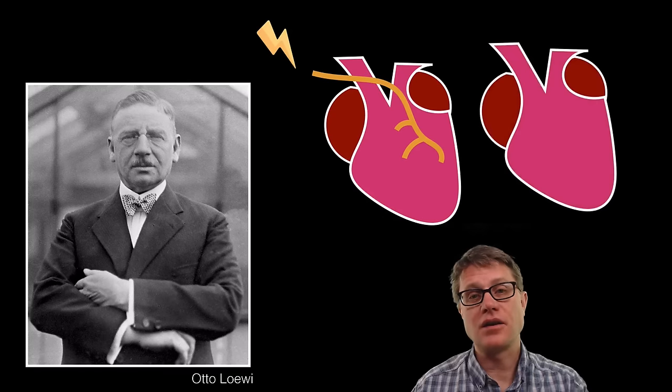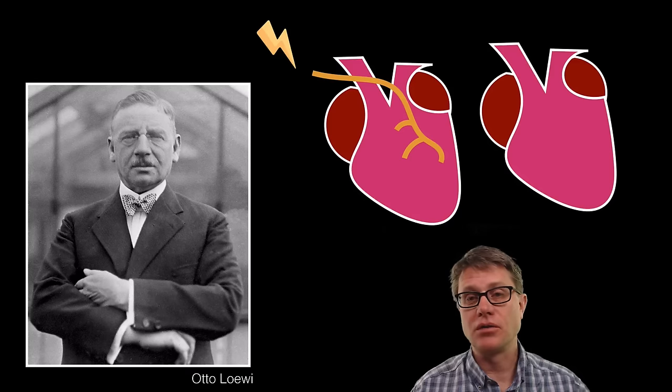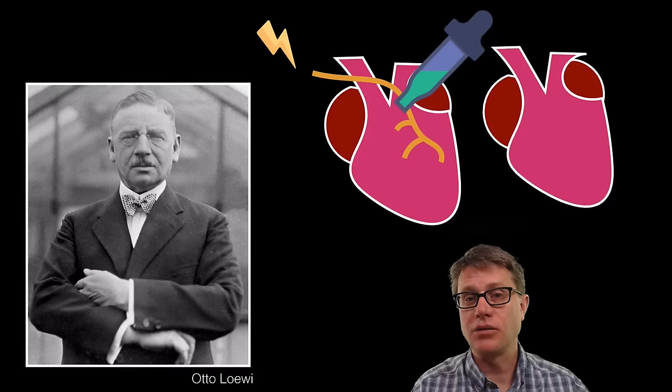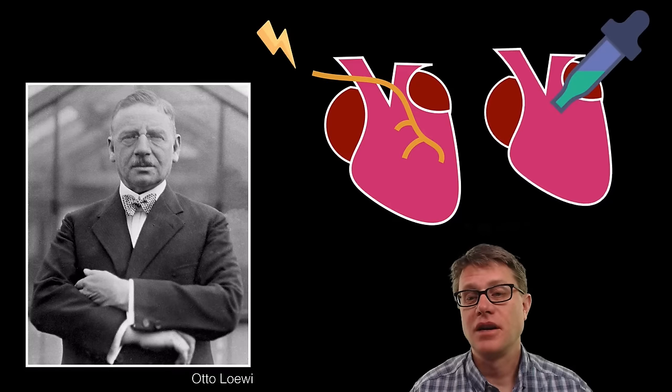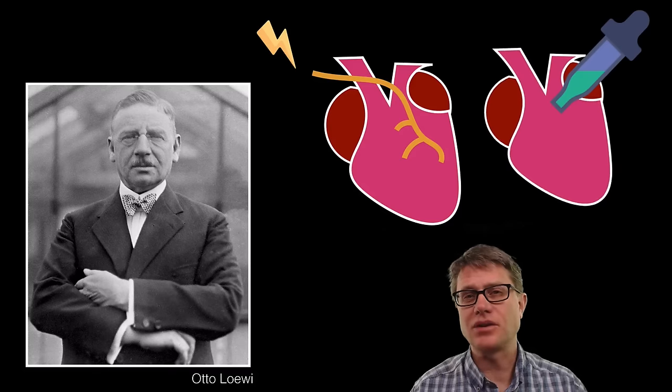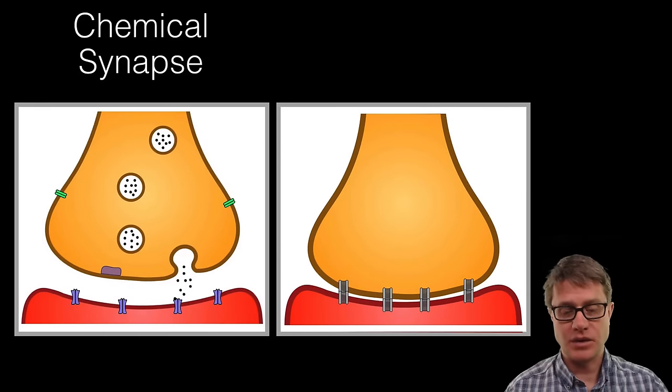He then took another heart from a different frog but he removed the vagus nerve. So there is no neuron there. He got it beating but he moved some of the liquid from the stimulated heart to the non-stimulated heart and it slowed down as well. What did that mean? There was something in the liquid. He discovered these neurotransmitters and he discovered a chemical synapse.